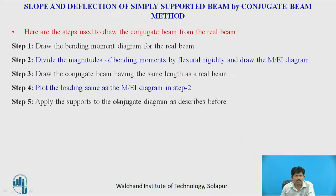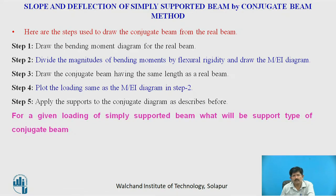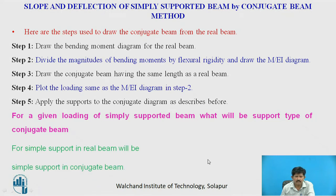To draw the conjugate beam: first, find the bending moment diagram of the real beam; then divide the bending moment by the flexural rigidity EI to draw the M upon EI diagram; draw the conjugate beam having the same length as the real beam; plot the M upon EI loading on the conjugate beam; and apply supports as described. For a simply supported beam, the conjugate beam will also be simply supported.